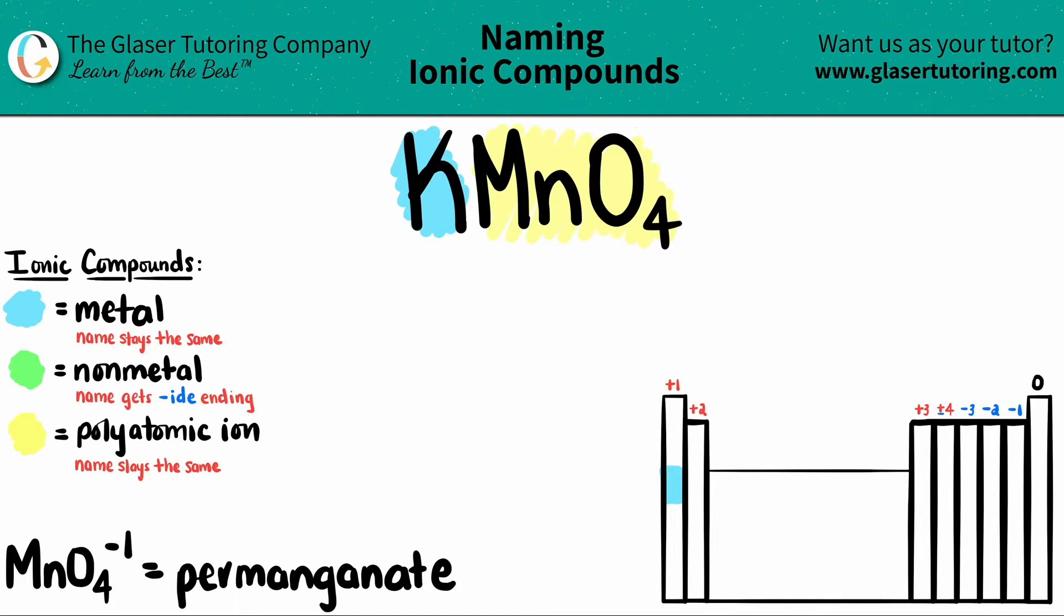Now we're ready to name. The metal name always comes first and it always stays the same. So K, being potassium, is just going to stay potassium.